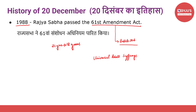Before the 61st Amendment, Article 326 stated that any citizen of India who is 21 years of age or above and who is not disqualified on any other grounds such as non-residence, crime, corrupt or illegal practices, or unsoundness of mind, is eligible to vote in an election. The proposal to reduce the voting age was brought forward to increase the participation of youth in the country's electoral process. The Constitution 61st Amendment Act was introduced in the Lok Sabha on 13th December 1988.